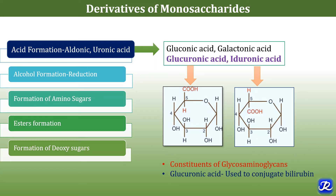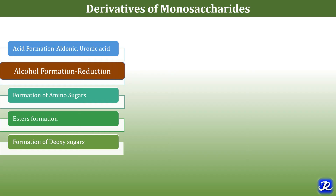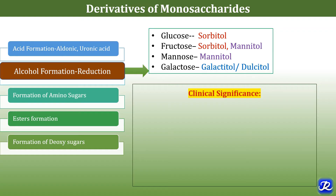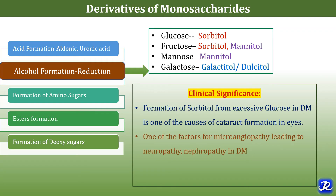UDP-glucuronic acid is used to conjugate bilirubin. The second reaction of monosaccharides is alcohol formation by reduction. Various alcohols are formed: sorbitol is formed from glucose and fructose, mannitol is formed from fructose and mannose, and galactose is reduced to form galactitol or dulcitol. The clinical significance is that formation of sorbitol from excessive glucose in diabetes mellitus is an important cause of cataract formation in the eyes, and is also a factor in microangiopathy leading to neuropathy or nephropathy in diabetes mellitus. Mannitol is an osmotic diuretic used in IV infusion to decrease intracranial pressure.